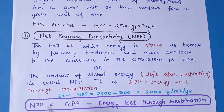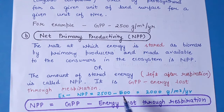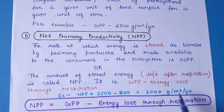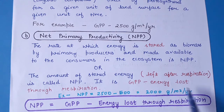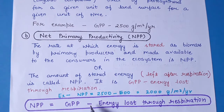For example, if GPP is 2500 grams per meter square per year, and the energy lost through respiration is 500, then NPP equals 2000 grams per meter square per year. So the formula is: Net Primary Productivity = Gross Primary Productivity minus the energy lost through respiration.